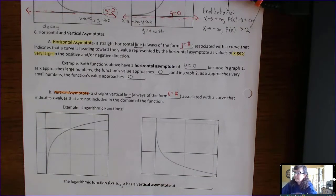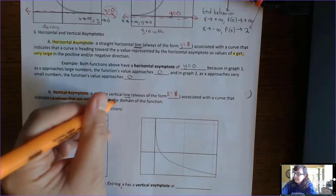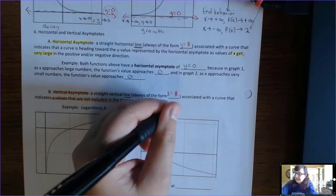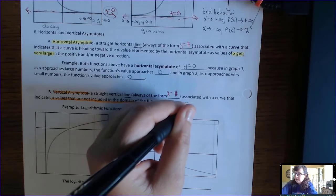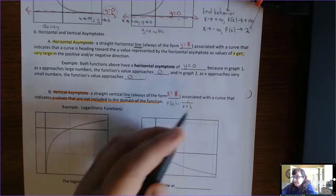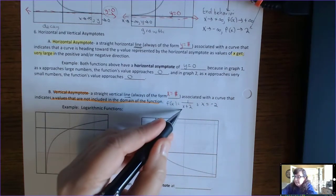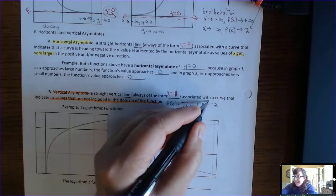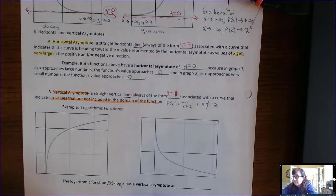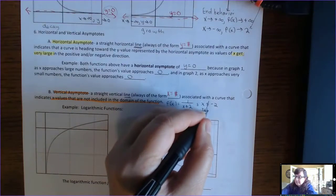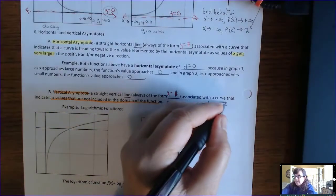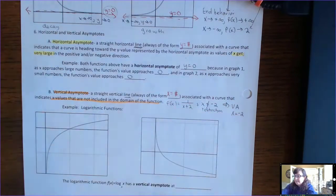That's the key difference — x values not included in the domain. For example, f(x) = 1/(x+2): you're not allowed to have 0 in the denominator. If x were to equal negative 2, we'd get 1/0, which is not a number. So x is not allowed to be negative 2 — negative 2 is not in the domain. It's a restriction, and it will show up as a vertical asymptote at x equals negative 2.